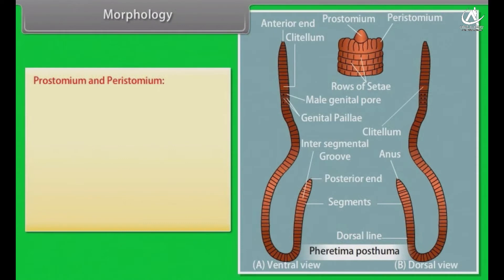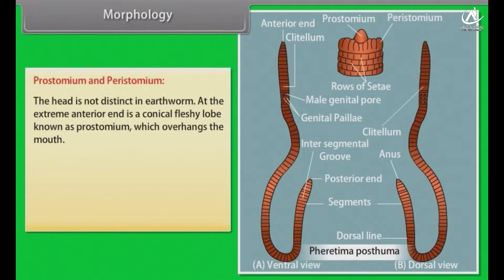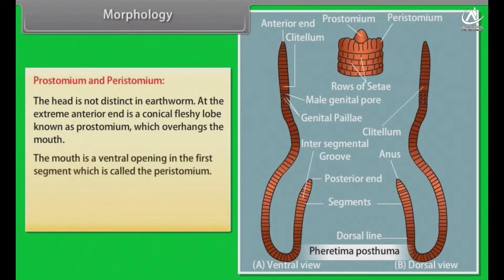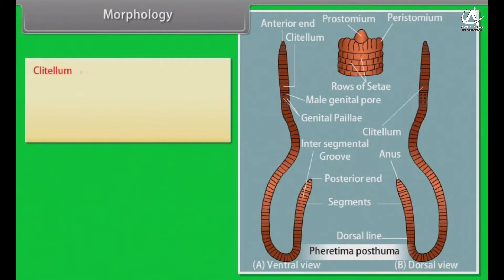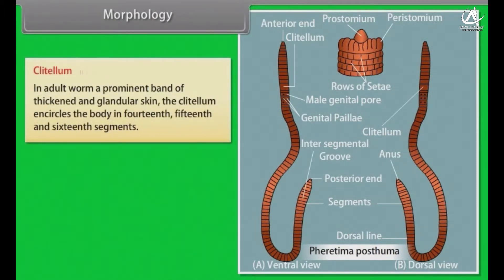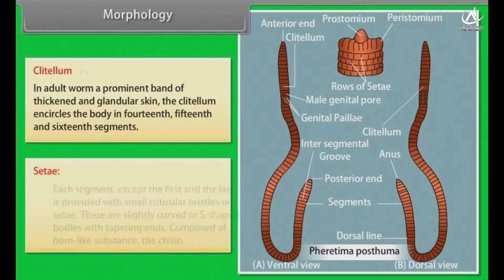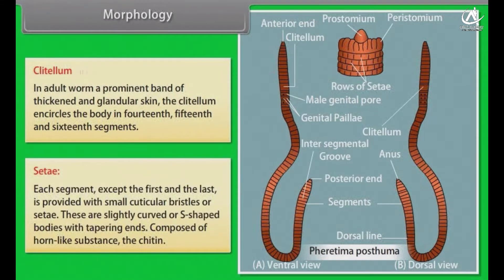The head is not distinct in earthworm. At the extreme anterior end is a conical fleshy lobe known as prostomium, which overhangs the mouth. The mouth is a ventral opening in the first segment, called the peristomium. The prostomium is sensory in function and helps the earthworm discriminate between light and dark. In adult worm, a prominent band of thickened and glandular skin, the clitellum, encircles the body in the 14th, 15th and 16th segments. Each segment, except the first and the last, is provided with small cuticular bristles or setae, which are slightly curved or S-shaped bodies with tapering ends, composed of chitin.